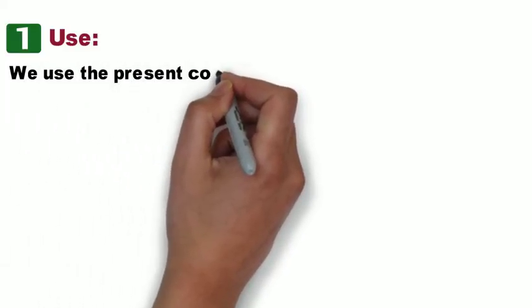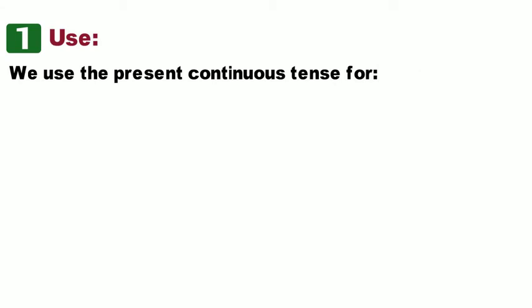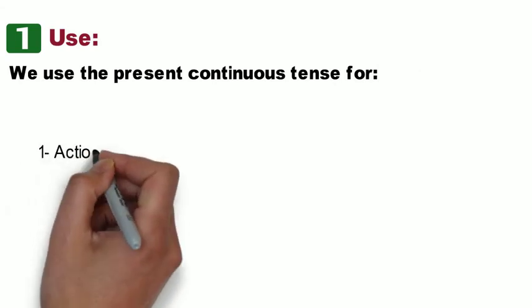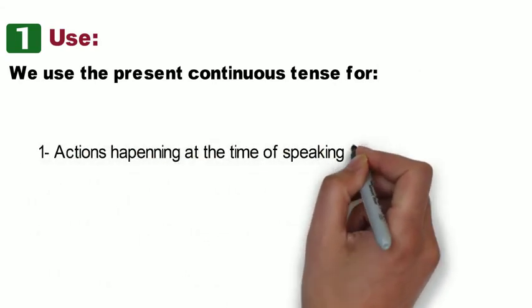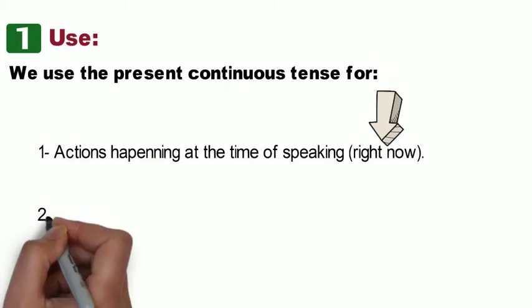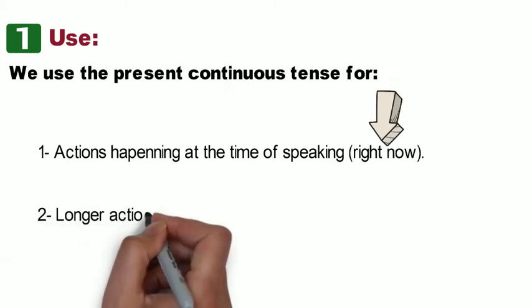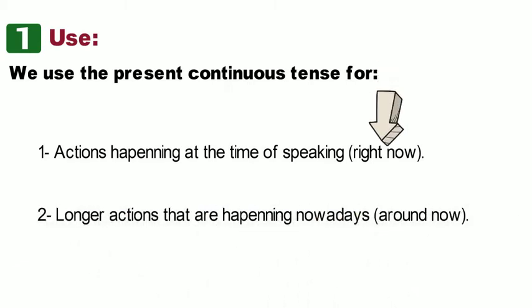So let's summarize. We use the present continuous tense for actions that are happening at the time of speaking, and for longer actions that are happening nowadays.